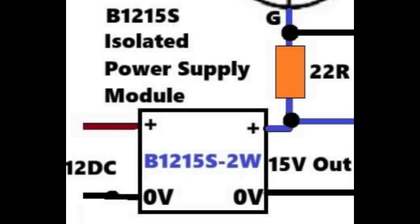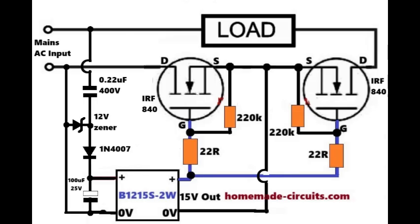This isolated 15 volt output is connected to both gates through 22 ohm resistors. These resistors prevent sudden current spikes and avoid MOSFET damage. Each gate also has a 220K resistor for discharging leakage and keeping the gate stable during AC swings.